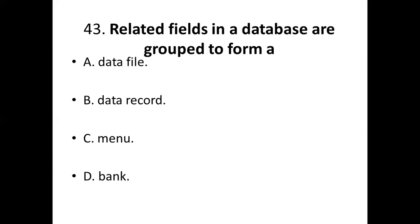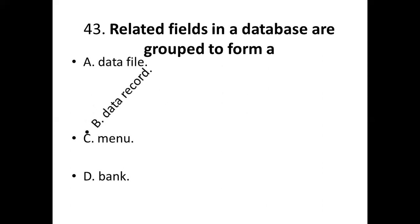43rd bit: Related fields in a database are grouped to form a dash. Option A: data file. Option B: data record. Option C: menu. Option D: bank. Answer — Option B: data record.